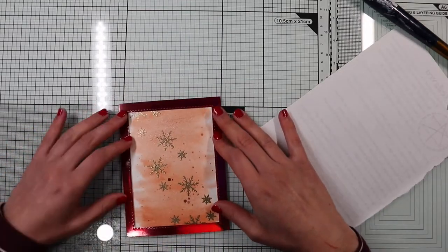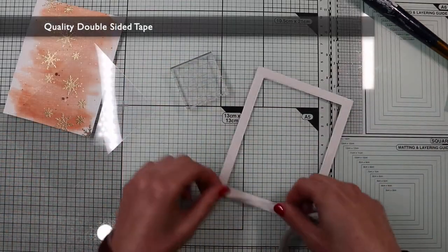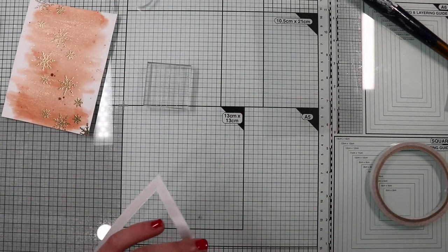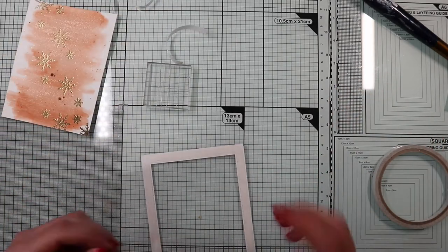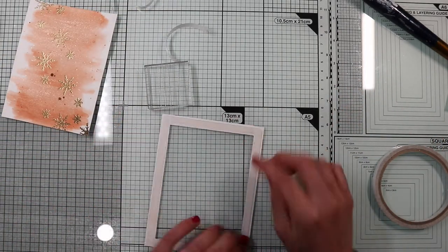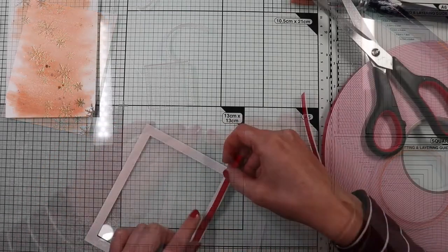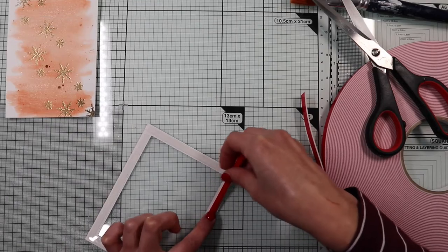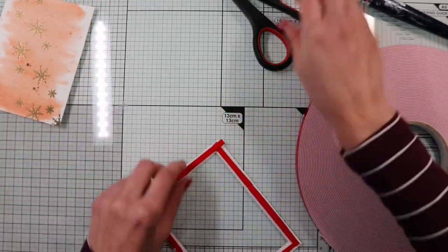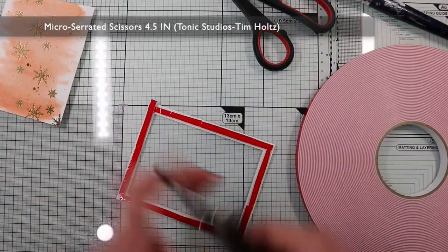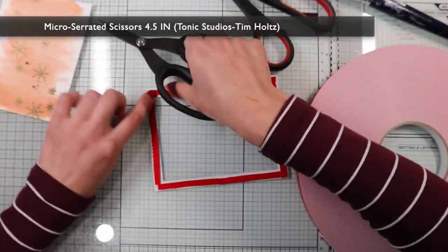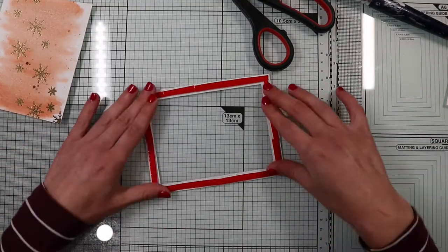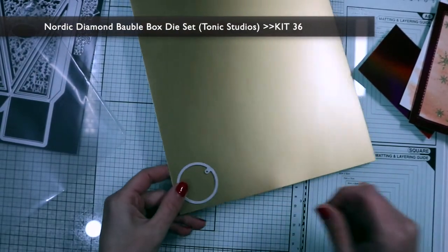So, as with any shaker card, I glue a piece of acetate sheet on the back of the window. Then I apply the foam tape, creating the space that will contain the element of the shaker card. So I'm careful not to leave any open spaces where the element could escape.